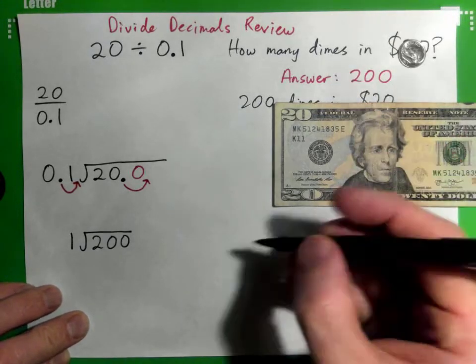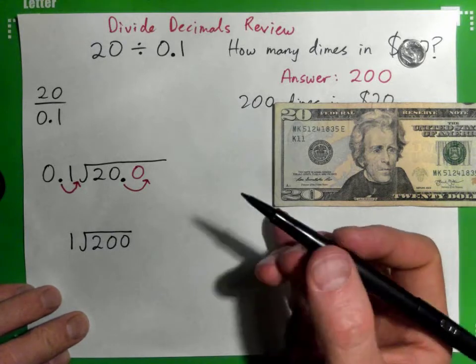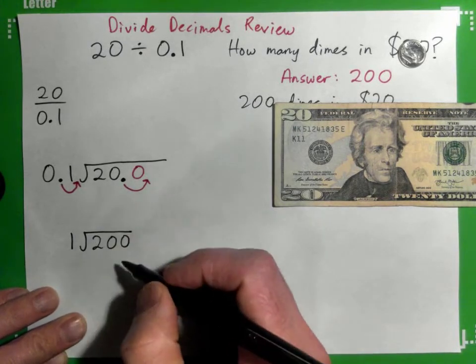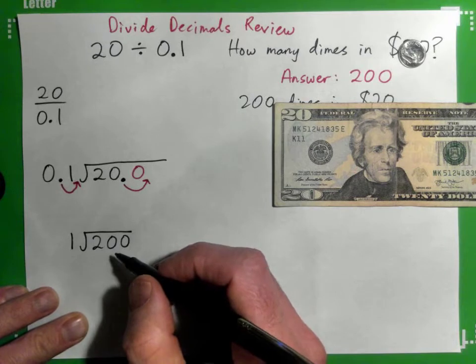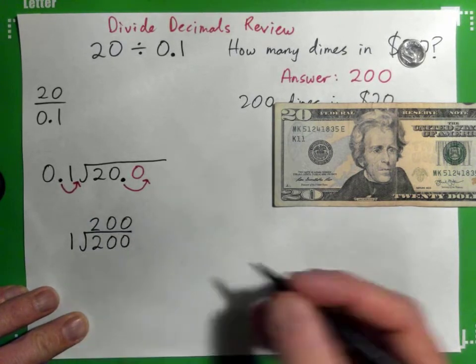Which is a really bad example because there's almost no division to be done, but what does this make? What's 1 into 200? Yeah, 1 into 2 is 2, 1 into 0 is 0, 1 into 0 is 0. So the answer is 200.